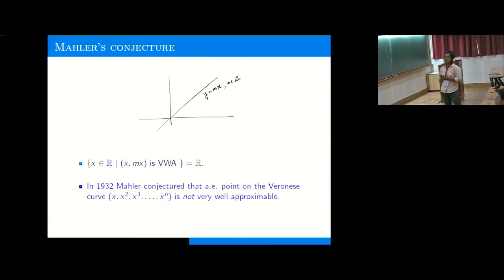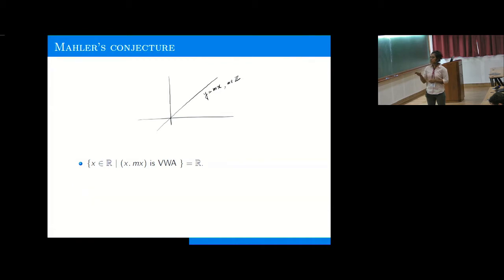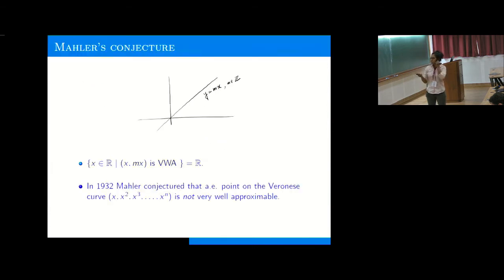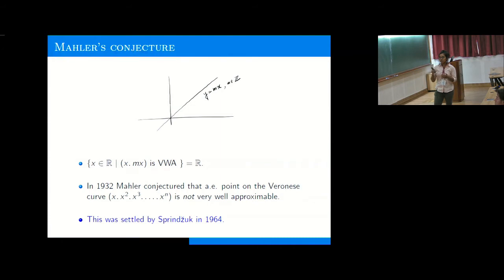Mahler in 1932 conjectured that if you take the curve (x, x^2, ..., x^n), then almost every point is not very well approximable — so in the parabola, the set of very well approximable points has measure zero. This was settled by Sprindžuk in 1964, who realized that the parabola behaves like the ambient space because of its curvedness — it is not contained inside any proper hyperplane in R^2, so it behaves like R^2.